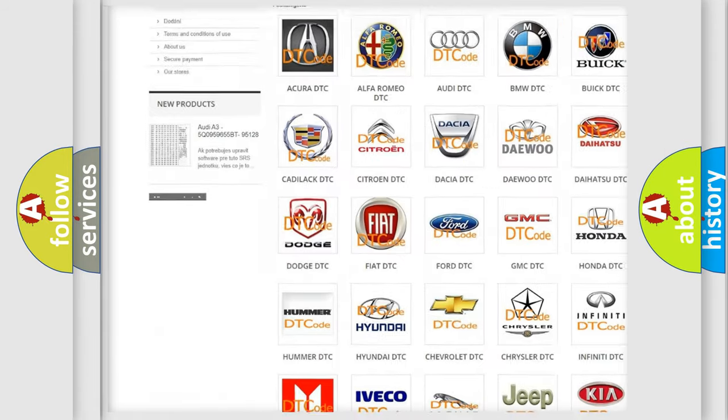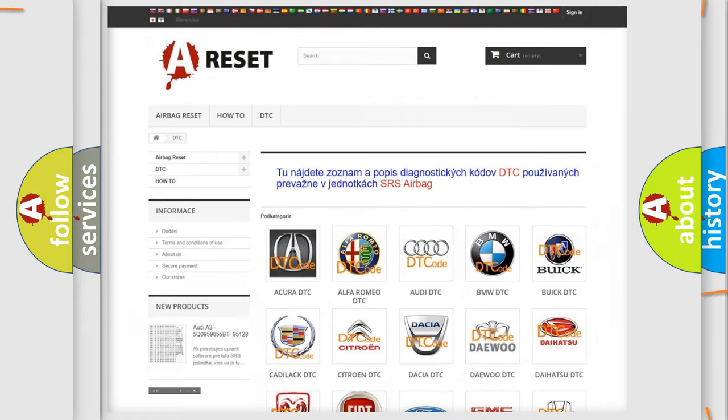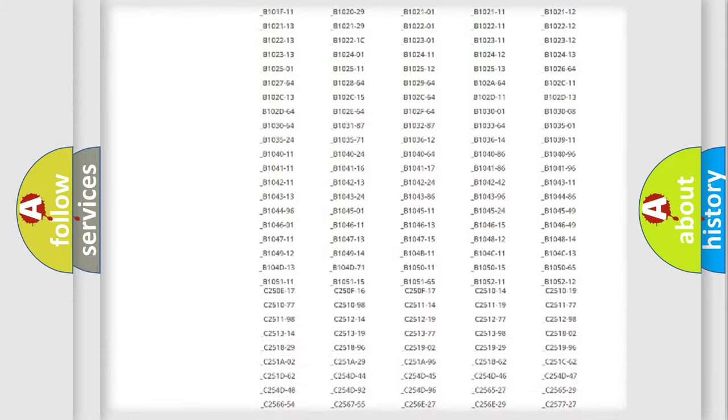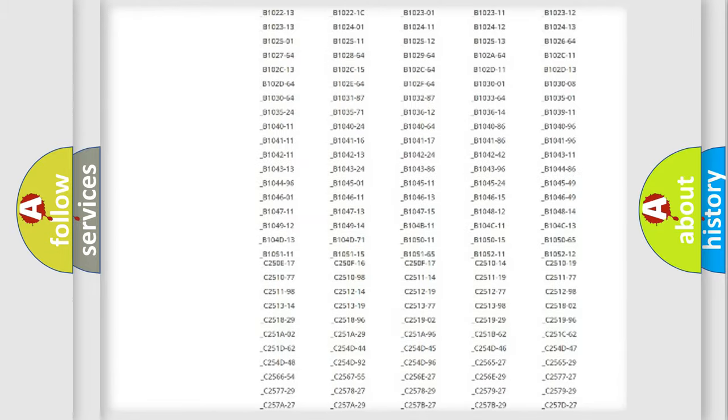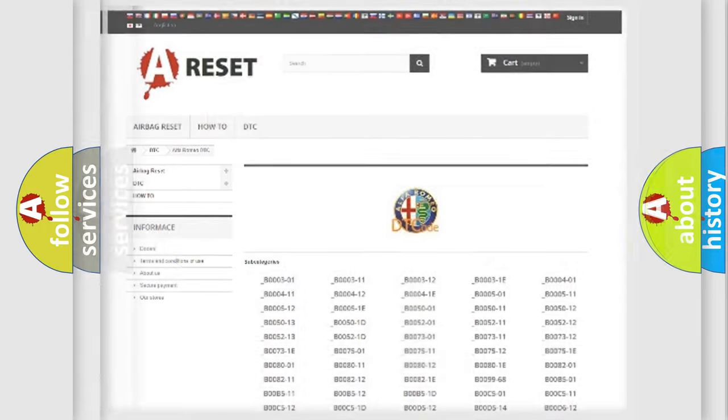Our website airbagreset.sk produces useful videos for you. You do not have to go through the OBD2 protocol anymore to know how to troubleshoot any car breakdown. You will find all the diagnostic codes that can be diagnosed in Alfa Romeo vehicles, and many other useful things.